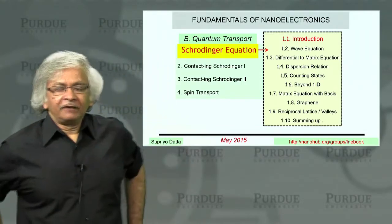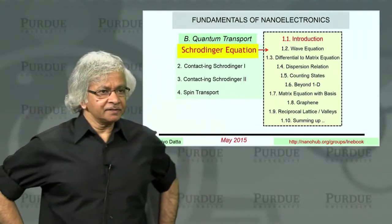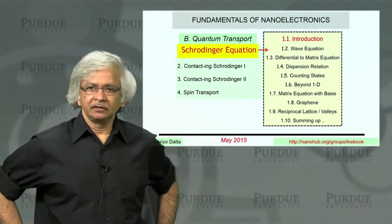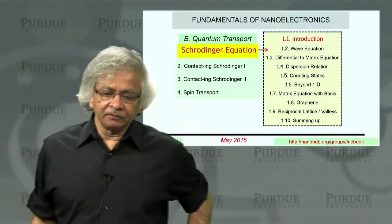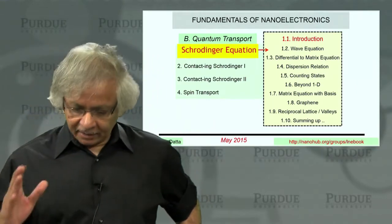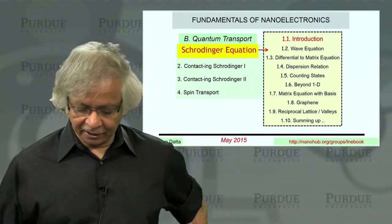Welcome to our course on the fundamentals of nanoelectronics. This is Part B, quantum transport. And this is Unit 1 of Part B, which is about the Schrodinger equation. So this is the introductory lecture.